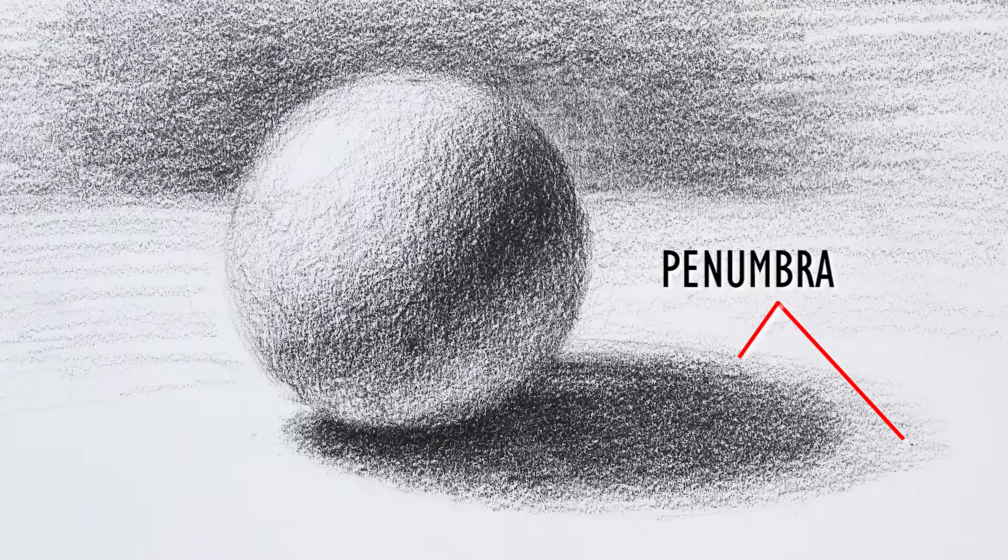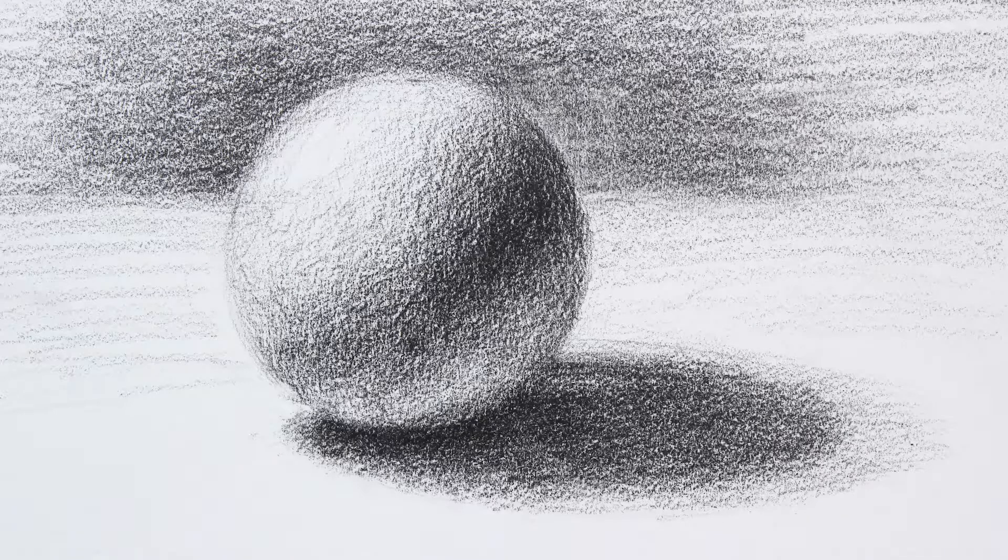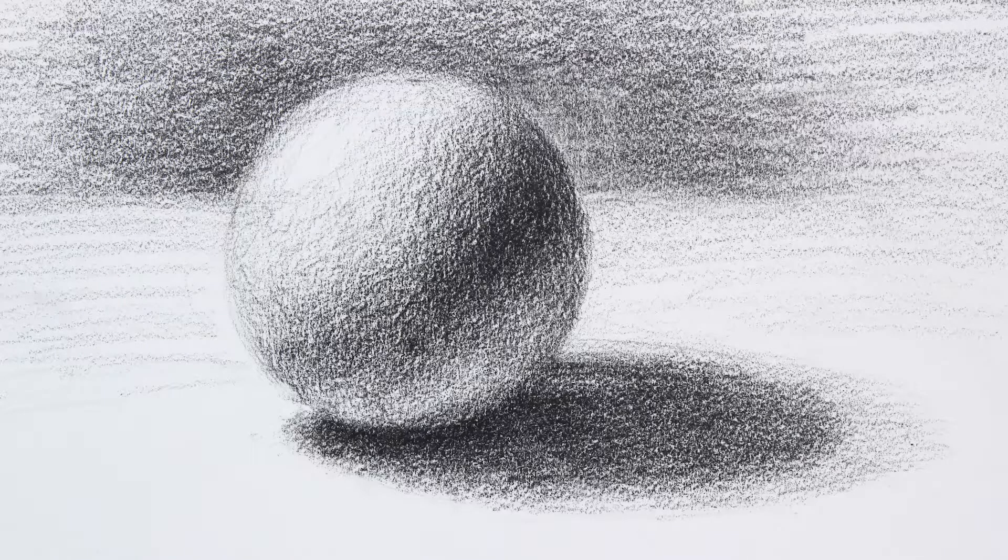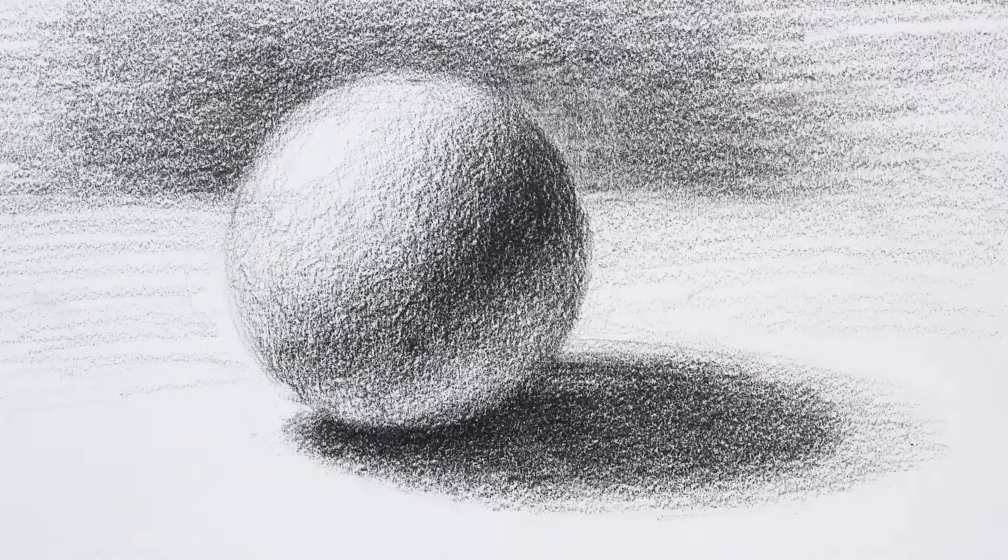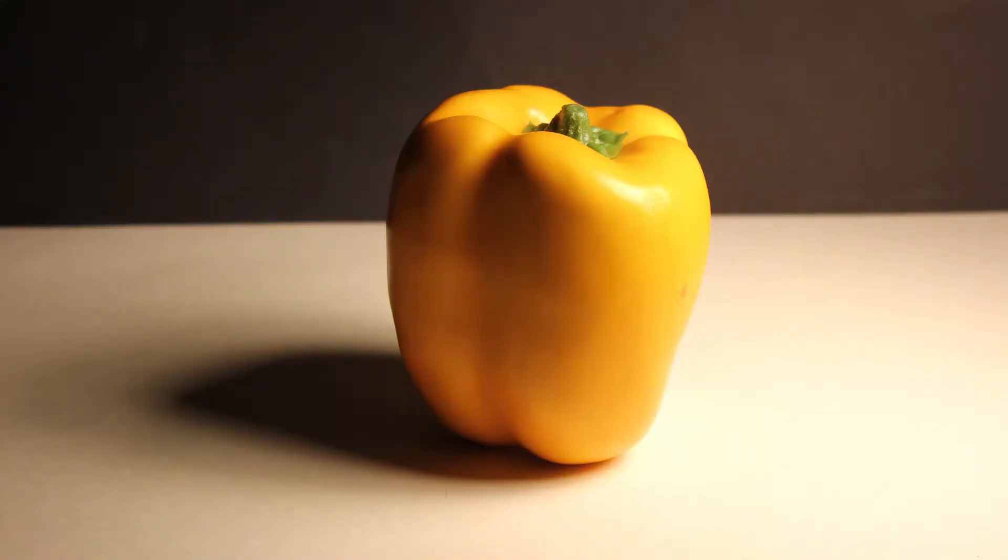Ok, so why is all of this important? Well, it's important because the value structures on a simple form, like a sphere, are found on more complex rounded forms, like this pepper. Can you identify any highlight on the pepper? How about the core shadow? Can you see any reflected light? And how about the cast shadow?